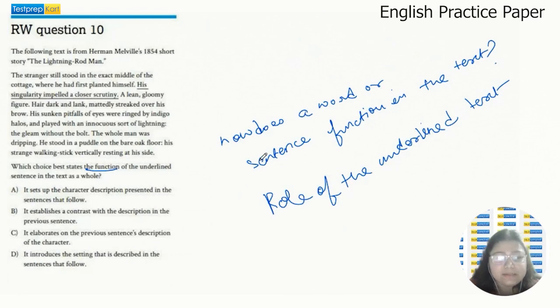So we have to find the role of this underlined text. Let's read. The stranger still stood in the exact middle of the cottage where he had first planted himself. Now planted doesn't mean that he literally planted himself like a tree. He just stood there.